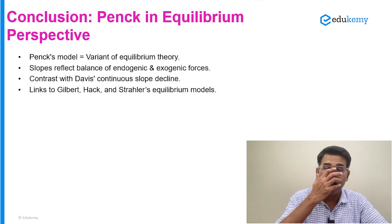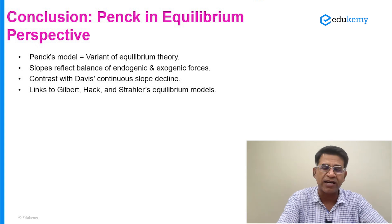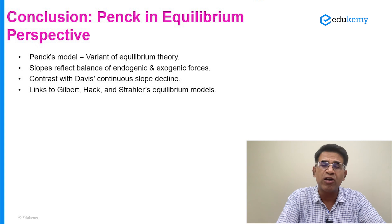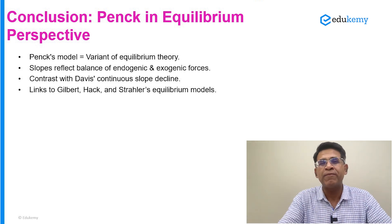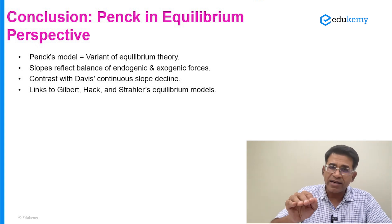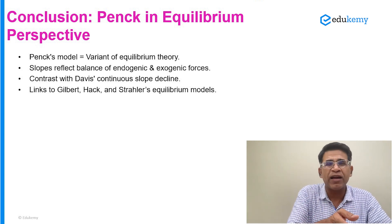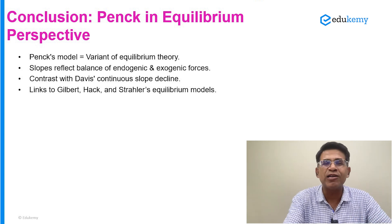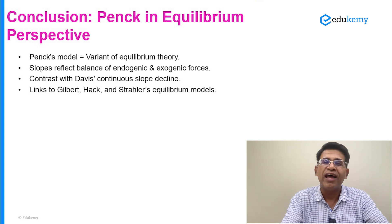Unlike Davis, who says slopes are always progressive and continuously decline and become gentle, Peng says slopes are a type of balance — a consequence of endogenic and exogenic processes. A typical answer on slope replacement must start with the flaws of Davis's model, then give the postulates of Peng's model, then explain the three or four aspects of Peng and how they differ from Davis, and end with the equilibrium ideas of slope — the modern theories — and how Peng is also a variant of the equilibrium model.